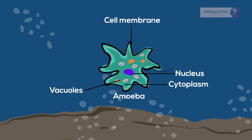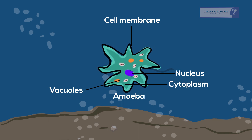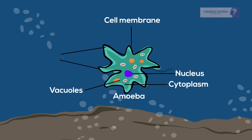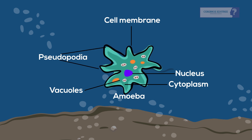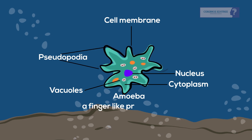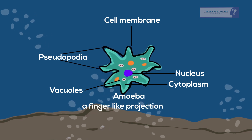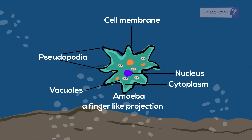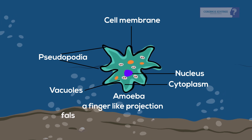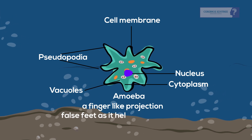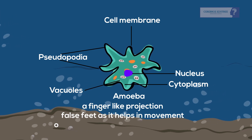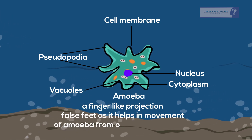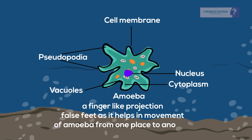Amoeba keeps changing its position and shape with the help of pseudopodia, a finger-like projection on the surface of amoeba. It is also called false feet, as it helps in the movement of amoeba from one place to another.